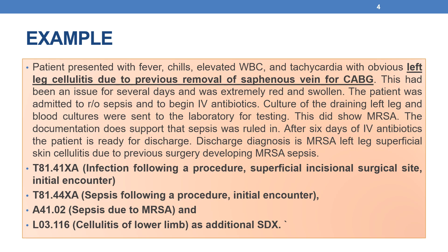The first code must be from category T81.41 — specifically T81.41XA: infection following a procedure, superficial incisional surgical site, initial encounter. Followed by, whenever we are coding sepsis for a post-procedural wound, an additional code from category T81.44 must be coded — specifically T81.44XA: sepsis following a procedure, initial encounter. Then, for the type of sepsis — sepsis due to MRSA — code A41.02. Followed by L03.1116, cellulitis of lower limb, as an additional diagnosis.